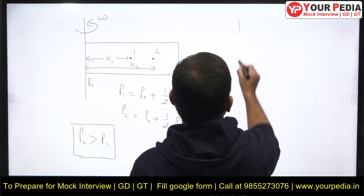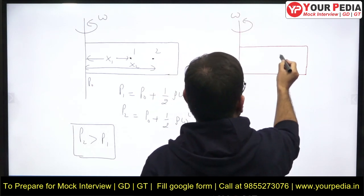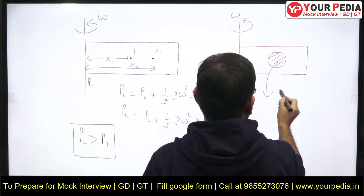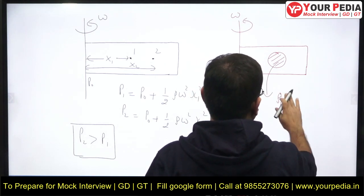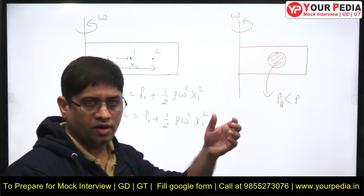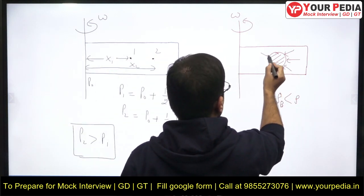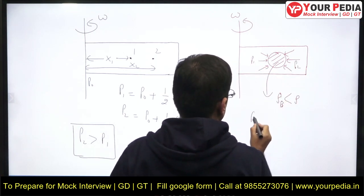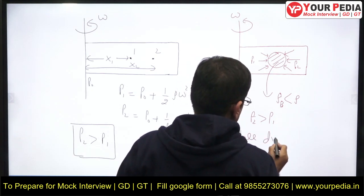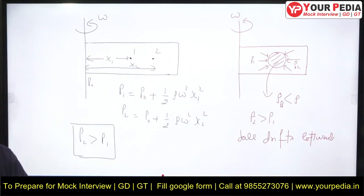Now the question given to us was: there is a tube which is having liquid of particular specific weight, and there is a ball inside the tube. The density of the ball is less than the density of the liquid. Now which direction will this ball move? P1, P2 - since P2 is more than P1, the ball drifts leftward. That will be the answer to this particular question.